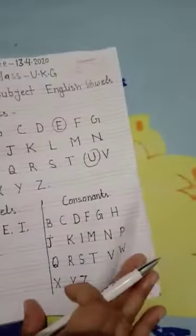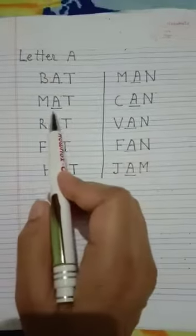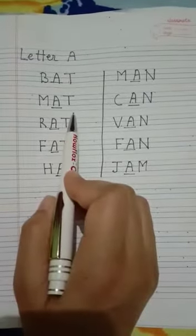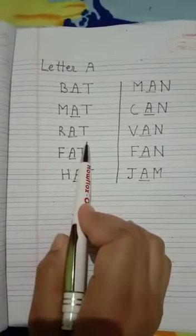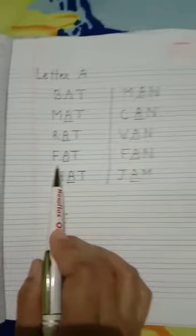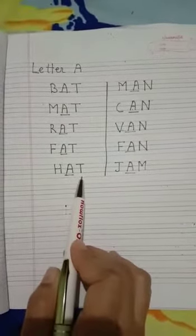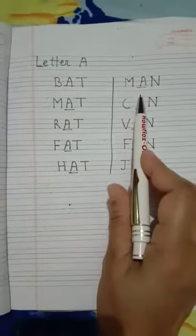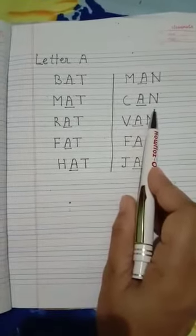And dear students, learn three letter words with help of letter A. How write three letters? B, A, T, bat. M, A, T, mat. R, A, T, rat. F, A, T, fat. H, A, T, hat. M, A, N, man. C, A, N, can.